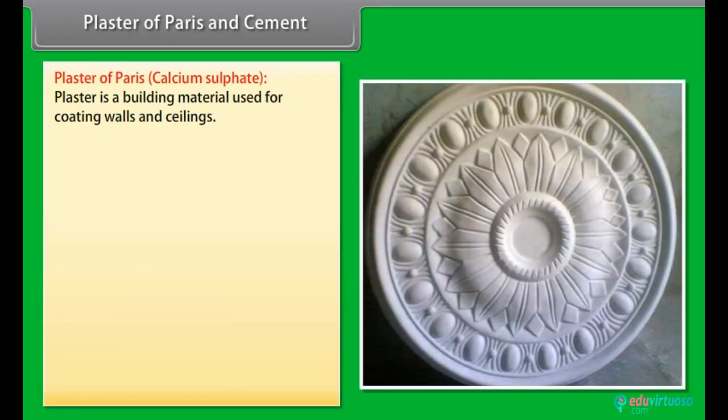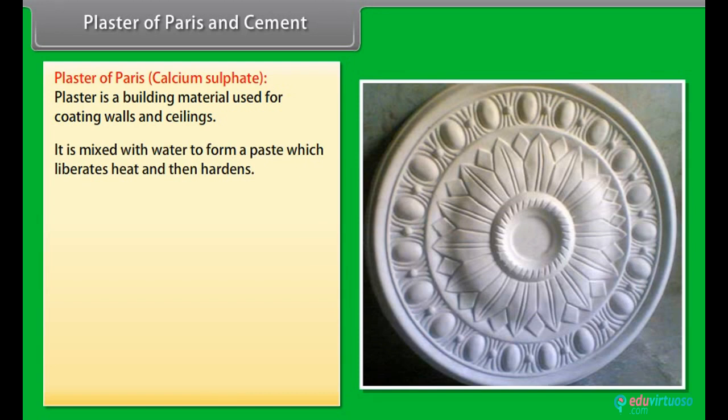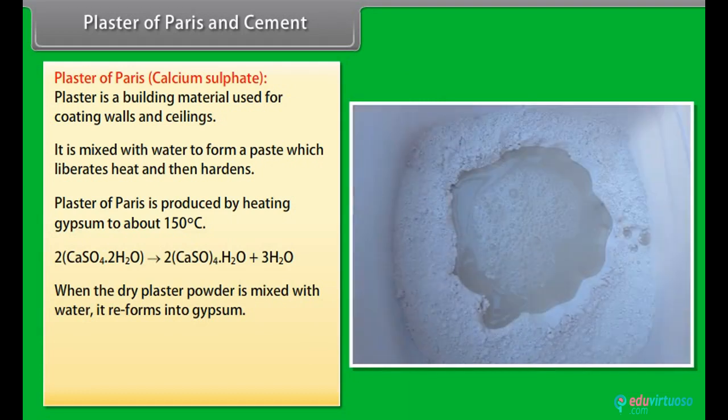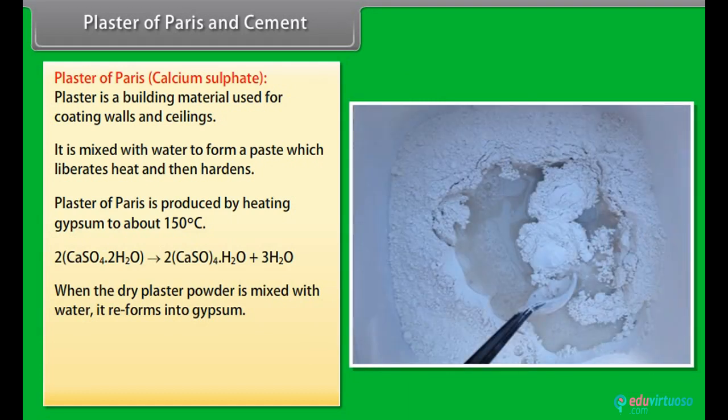Plaster of Paris: calcium sulfate. Plaster is a building material used for coating walls and ceilings. It is mixed with water to form a paste which liberates heat and then hardens. Plaster of Paris is produced by heating gypsum to about 150 degrees Celsius. When the dry plaster powder is mixed with water, it reforms into gypsum.